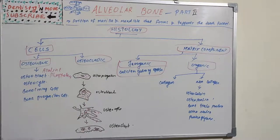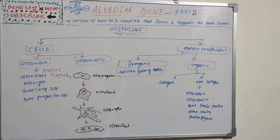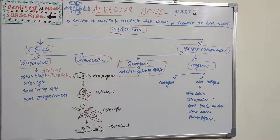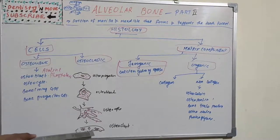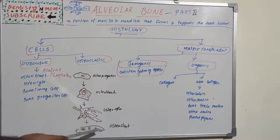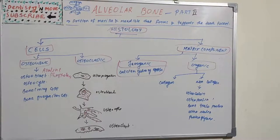Osteoprogenitor cells are fibroblast-like cells with an elongated nucleus and few organelles. Osteoclasts originate from hematopoietic tissue through fusion of mononuclear cells to form a multi-nucleated giant cell. This multi-nucleated giant cell has a ruffled border and a clear zone. It is very large and can have 5 to 50 nuclei.